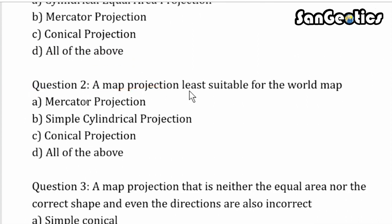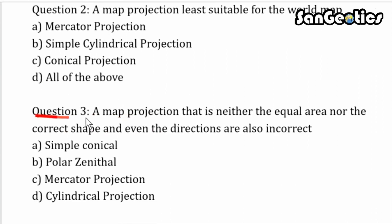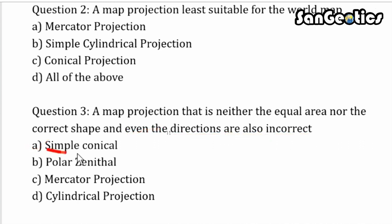Question 2: A map projection least suitable for a world map. Option A: Mercator's projection. Option B: Simple cylindrical. Option C: Conical. Option D: All of the above. Question 3: A map projection that is neither equal area nor correct shape, and even directions are also incorrect. Option A: Simple conical. Option B: Polar zenithal. Option C: Mercator's. Option D: Cylindrical equal area projection.